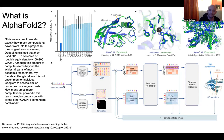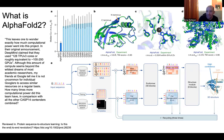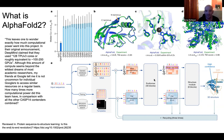What did AlphaFold2 do? It is a method that takes a sequence and produces a structure in one end-to-end network — not several separate steps. It can truly reason about structural constraints given a certain MSA. It has two major blocks: the Evoformer block and the structure module. The Evoformer block is probably the most important.